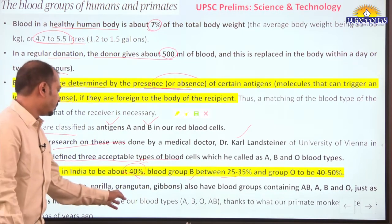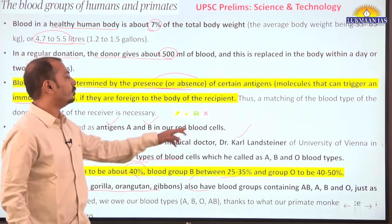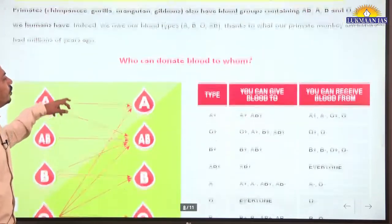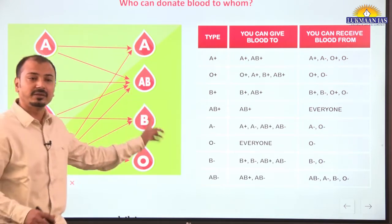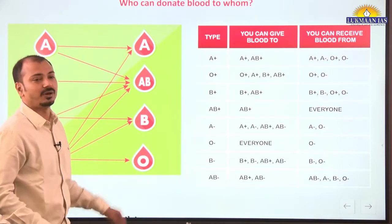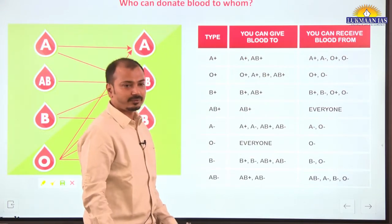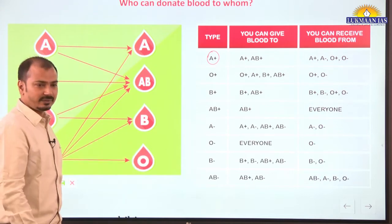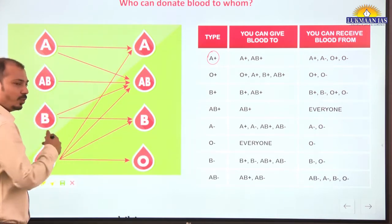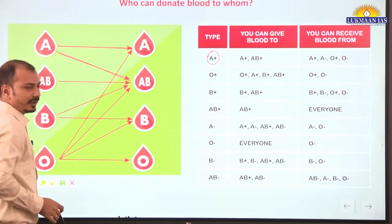Primates like chimpanzees, gorillas, orangutans, and gibbons have blood groups containing A, B, AB, and O — just like humans — so we have actually inherited this system from primates. For prelims examination, remember who can donate blood to whom. UPSC has asked questions on this topic before. Simply remember A, B, AB, and O blood groups without going into positive or negative detail. Blood group A can donate to A or AB, and can receive from A and O.